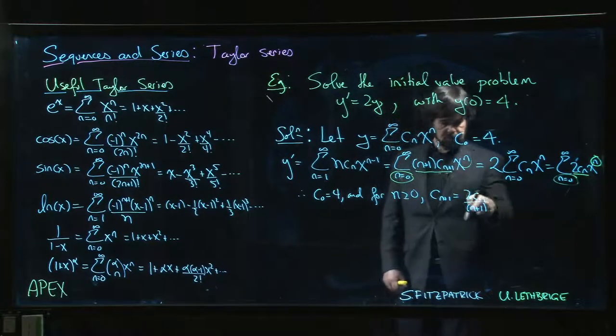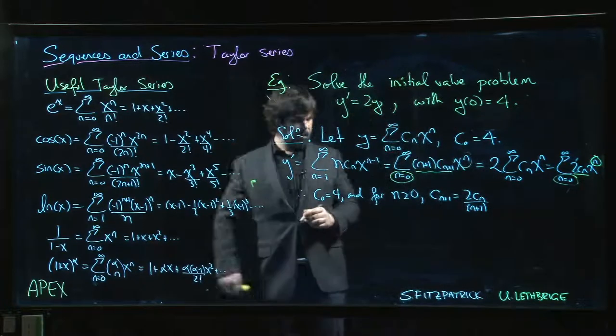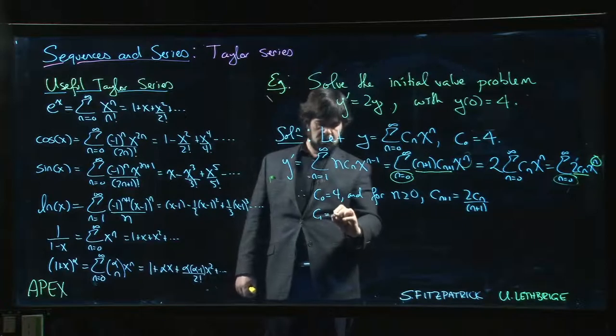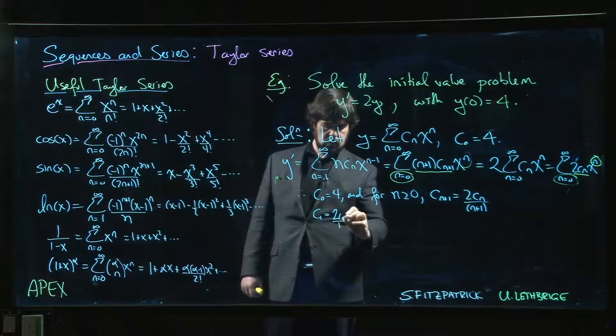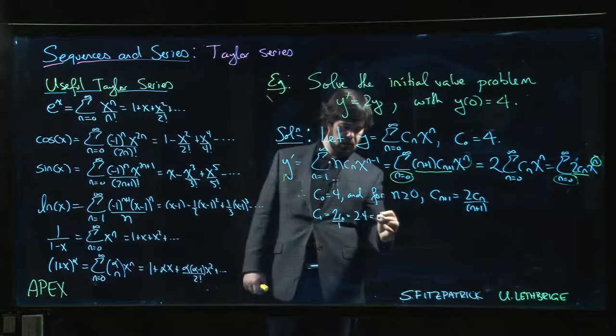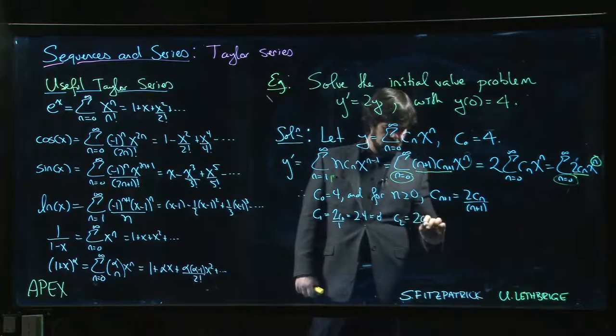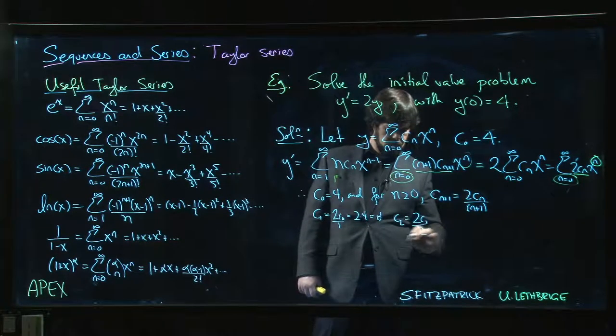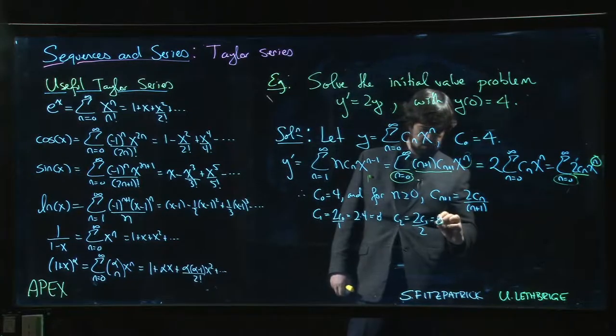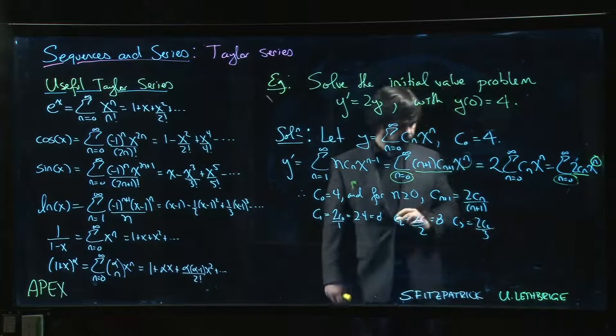So we have a recursion formula now. We can use that to start generating terms in the sequence. So c_1 will be 2 c_0 over 1, so I get 2 times 4, I get 8. c_2 is going to be 2 c_1 over 2, I get c_1 again, I get 8.